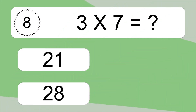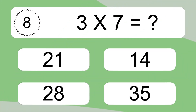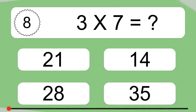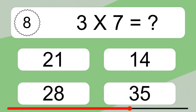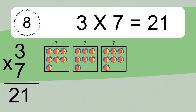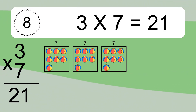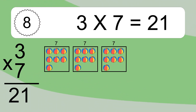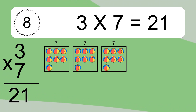3 times 7 equals what? 3 times 7 equals 21. We have 3 boxes, and each box has 7 colorful balls inside. If you count all the balls in all the boxes together, you will have 3 times 7 balls. This equals 21 balls.